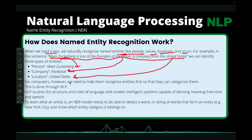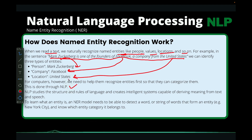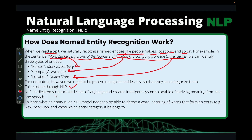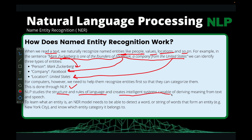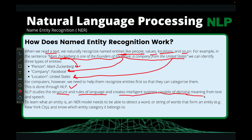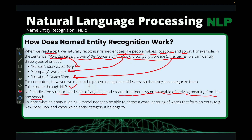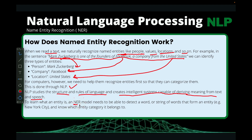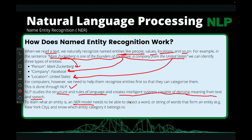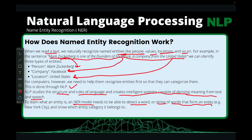For the computer to do that, we need to give it the power of natural language processing. It has to study the structure and the rules of the language, and then create intelligent systems capable of deriving meaning from the text, just like we do as humans. The named entity recognition model has to detect the word or string of words that form the entity.